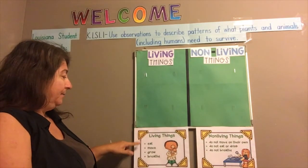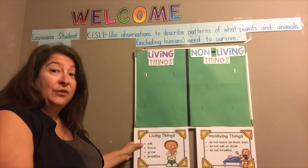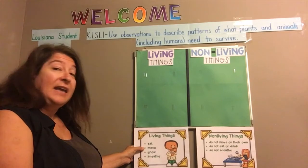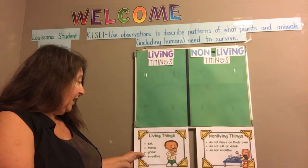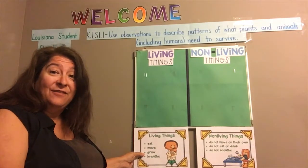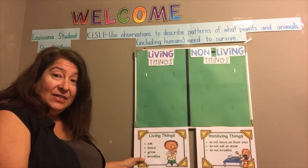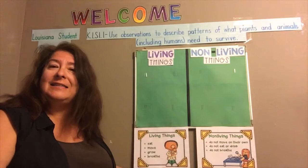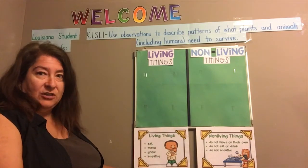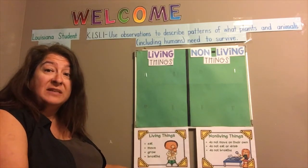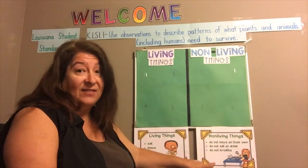First, let's look at living things. Living things eat, which is why they need food to survive. Living things can move on their own, by themselves — they don't need any help. Living things can grow and change, which is why they need food and water. And living things breathe, which is exactly why they need air. So those are the characteristics that living things all have in common.